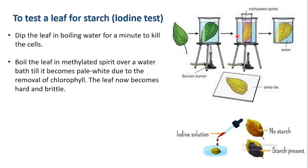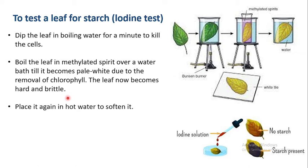In the water bath setup, a beaker is filled with water and a boiling tube inside it is filled with methylated spirit. We do not directly heat the methylated spirit as it can catch fire. The leaf is boiled in this methylated spirit over the water bath until it becomes pale white, because chlorophyll is removed by this process. The leaf now becomes hard and brittle.